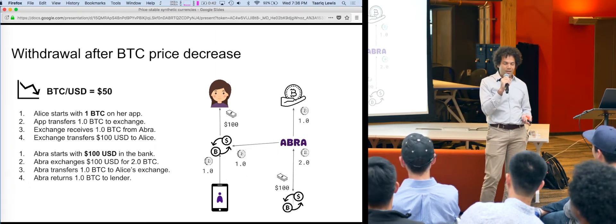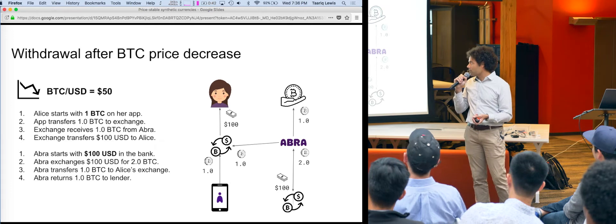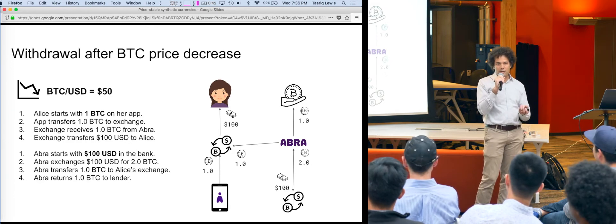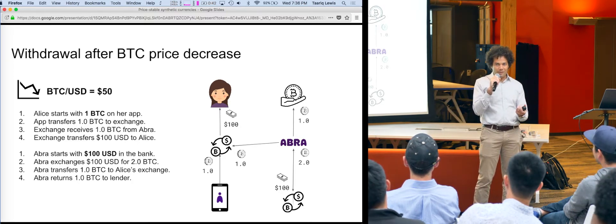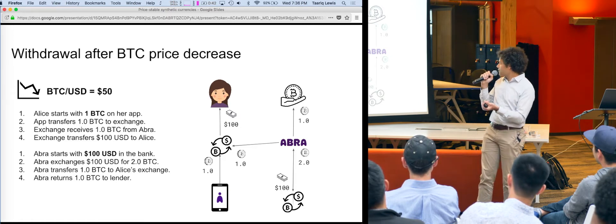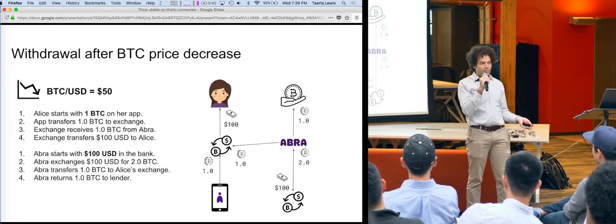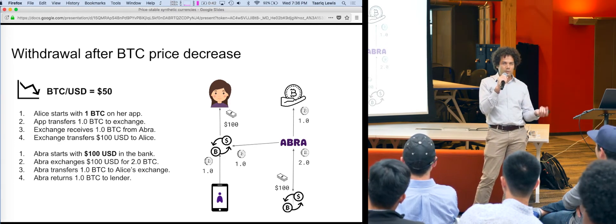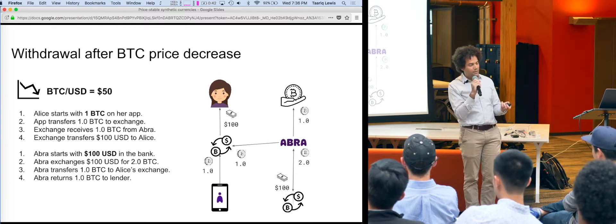But what if the price went down? So now the Bitcoin on Alice's app is worth only $50. It gets sent to the exchange partner — that's not enough to make the $100 that Alice needs. So Abra provides the other half of Bitcoin, and now there's two Bitcoins that they can sell for $100 to send to Alice. Meanwhile, Abra will use the $100 to exchange for two Bitcoin — one goes back to Alice and the other Bitcoin goes back to the lender. So everyone's happy.